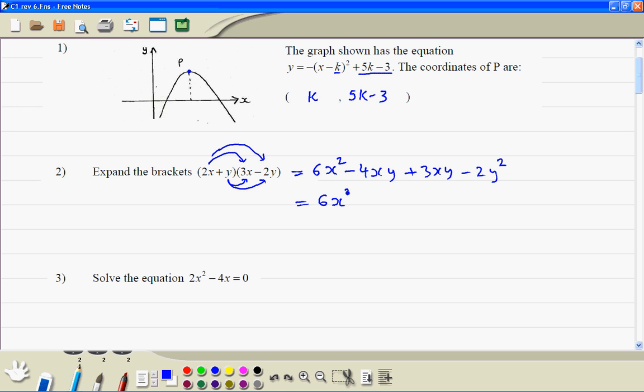Now the middle two terms need to be simplified. So 6x squared, minus 4 plus 3 is just minus 1, xy, minus 2y squared.